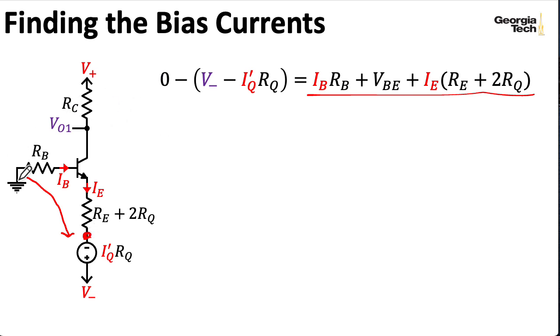So the voltage on the left is just zero. And then I'm going to subtract V minus, and now I have a minus sign here because I have the minus sign up here, my IQ prime RQ. So this voltage here is the voltage at this node. So I have a voltage drop of IB times RB, according to Ohm's law, then going to drop a voltage VBE.